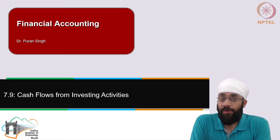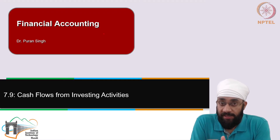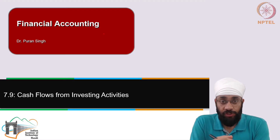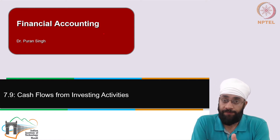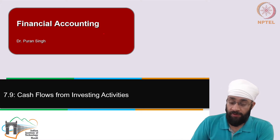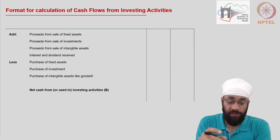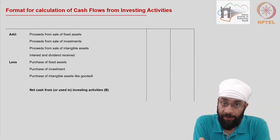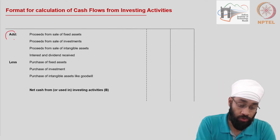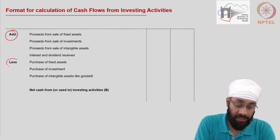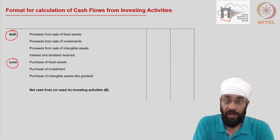In this video we are going to discuss the second subsection of the cash flow statement. This subsection deals with the investing activities of the business. On the screen you will see a format, a template of the investing activities — first we show the inflows and then we have the outflows.